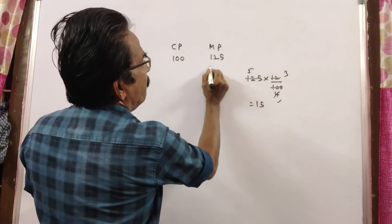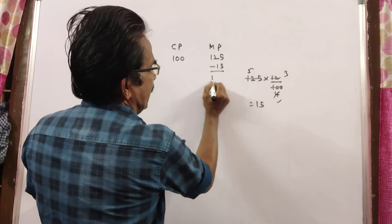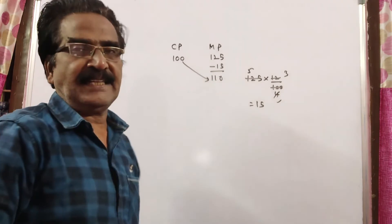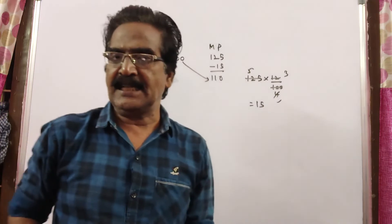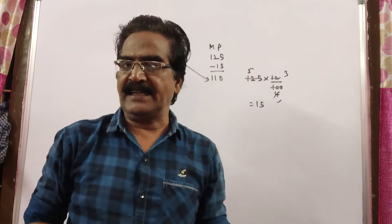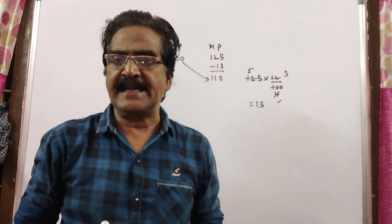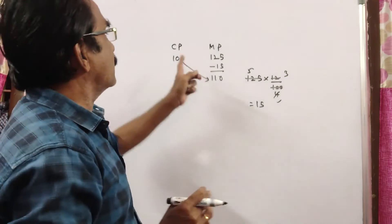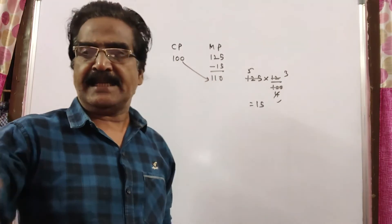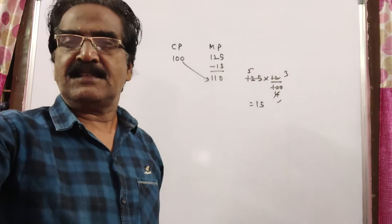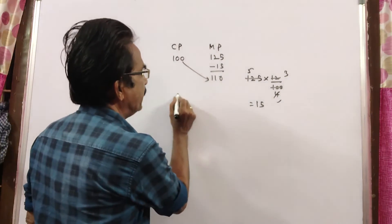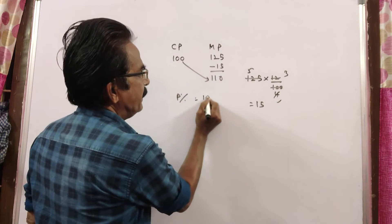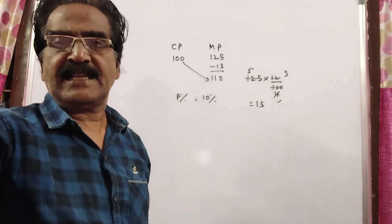So minus 15. He is selling the goods at 110. So profit is obviously 10%. Cost price 100, sold price 110 — profit percent is 10%. Thank you friends.